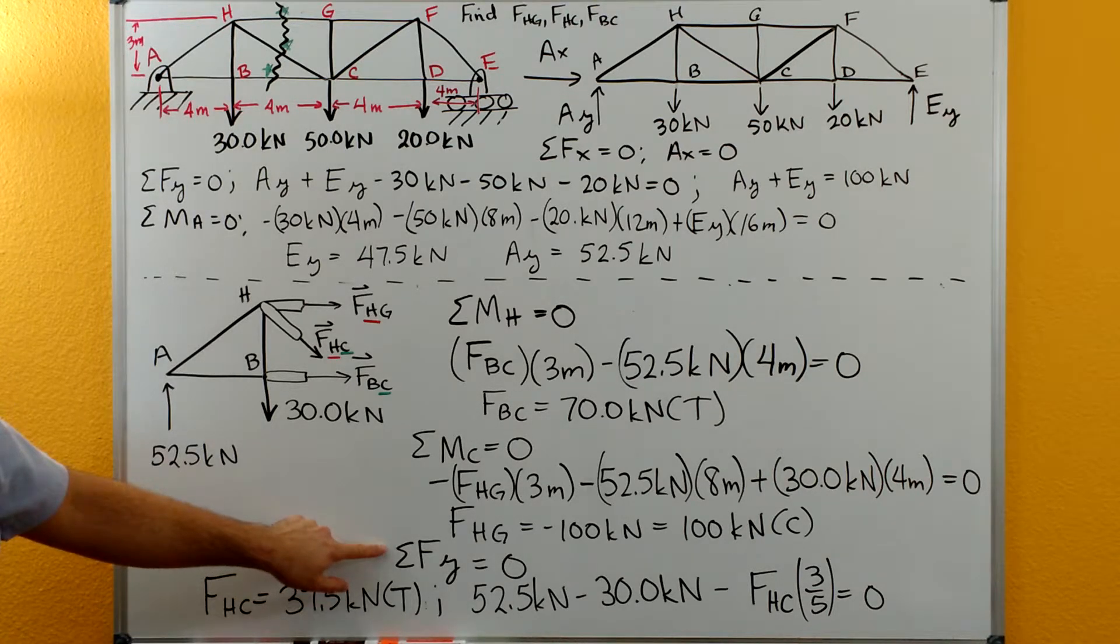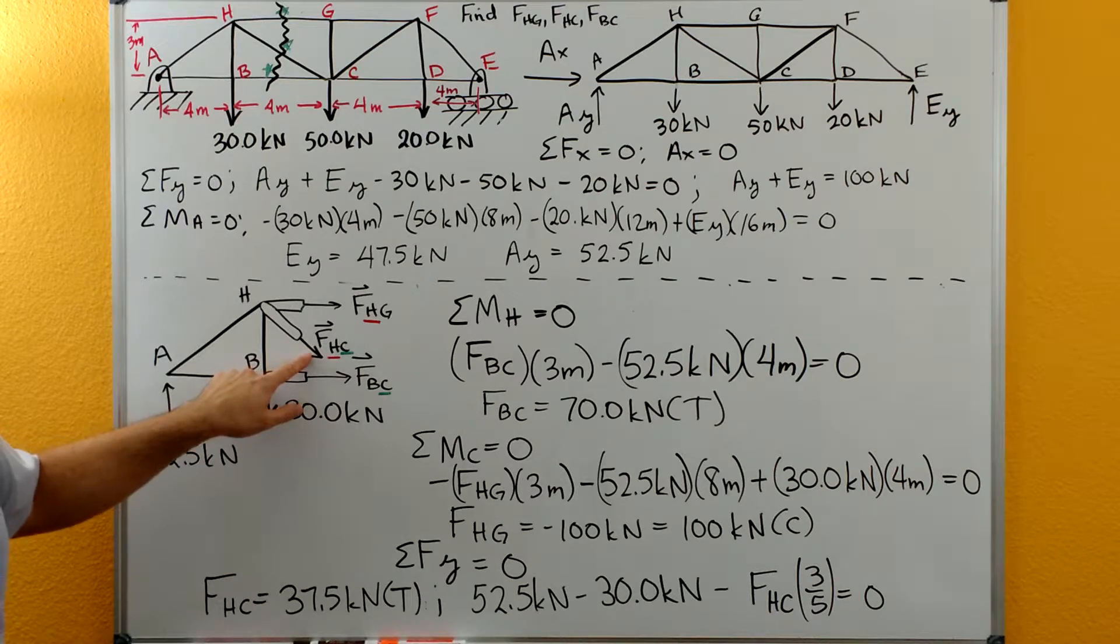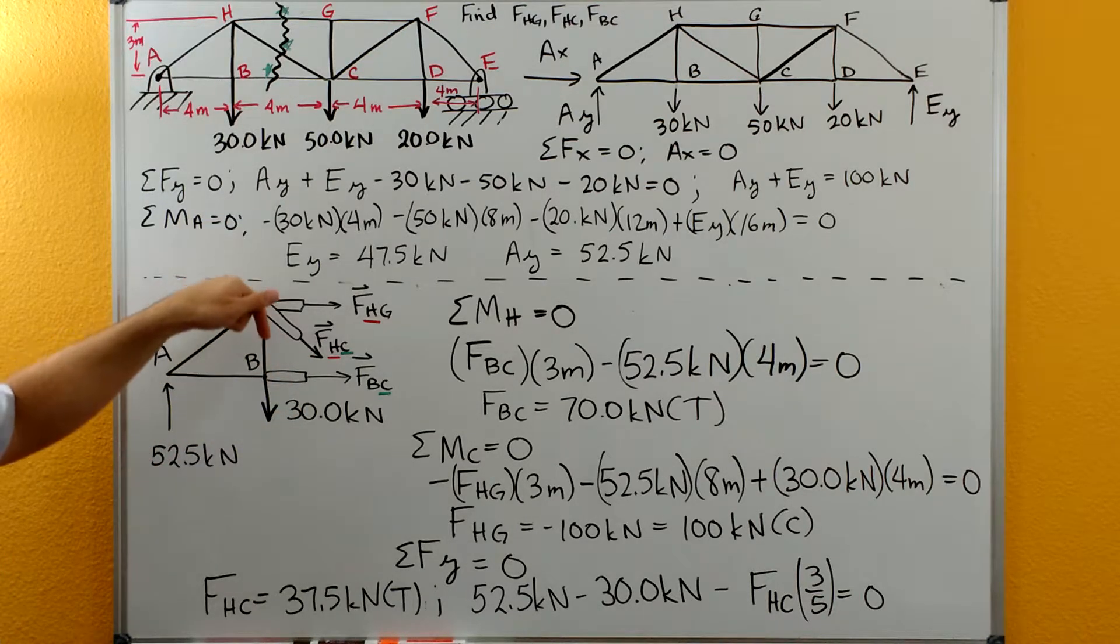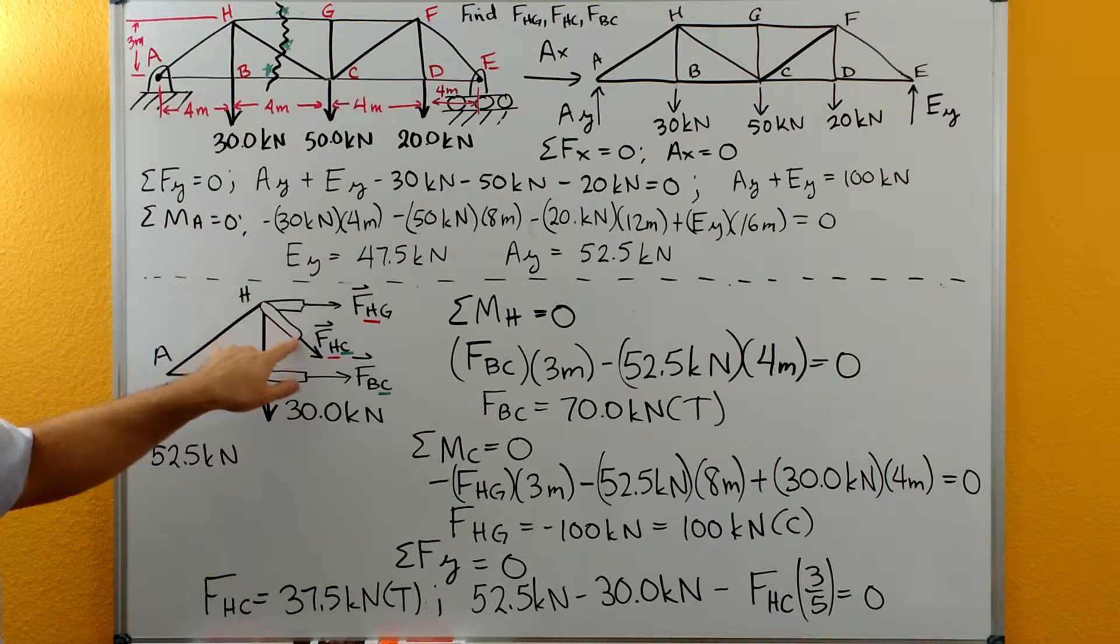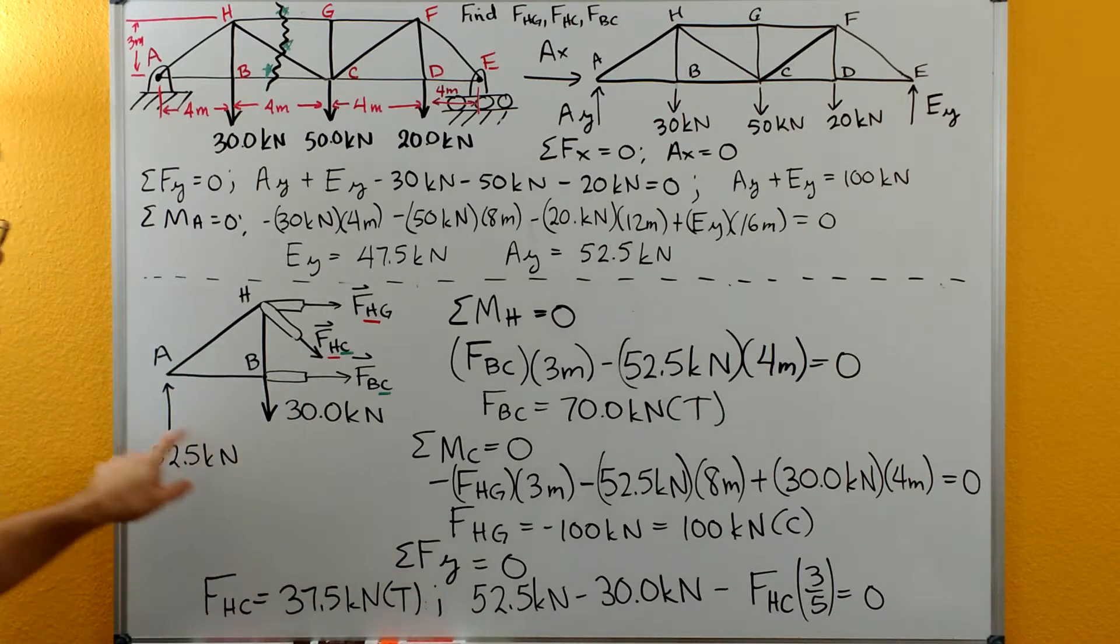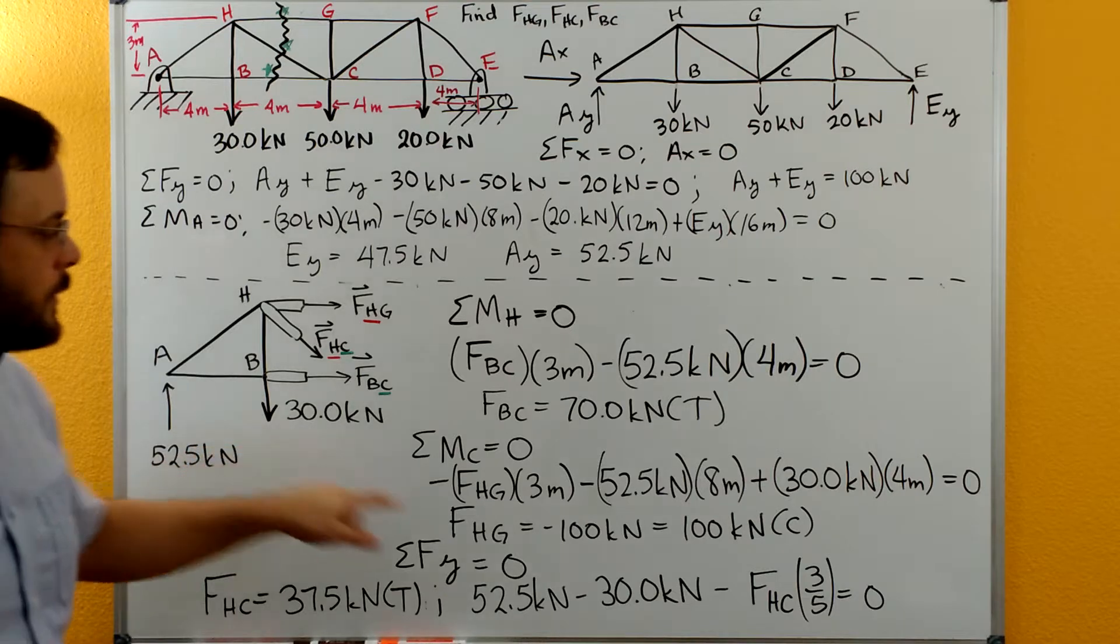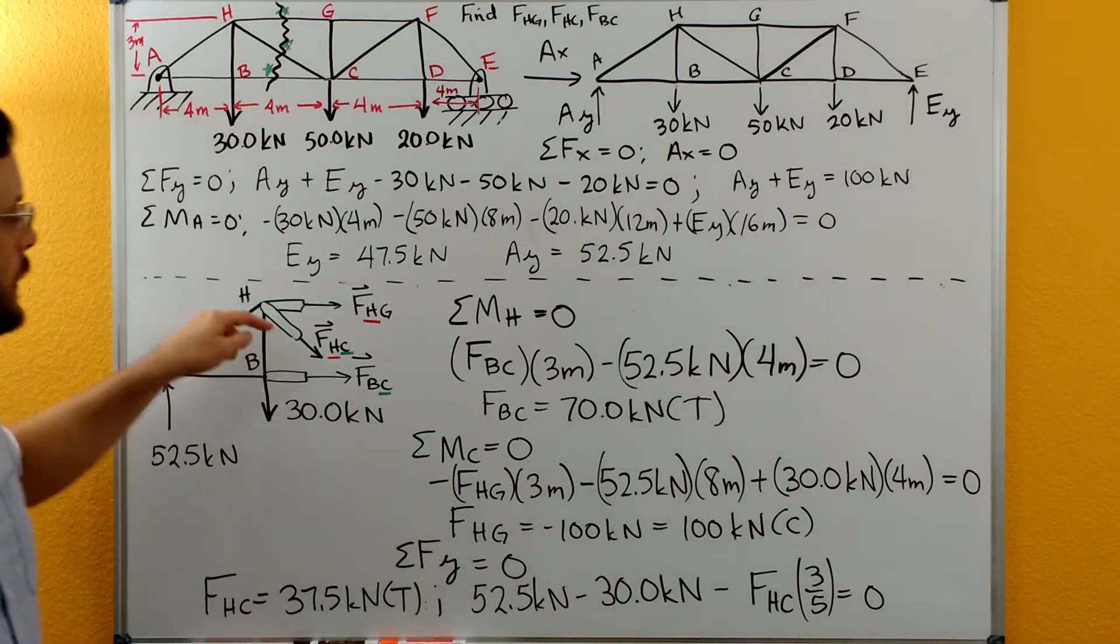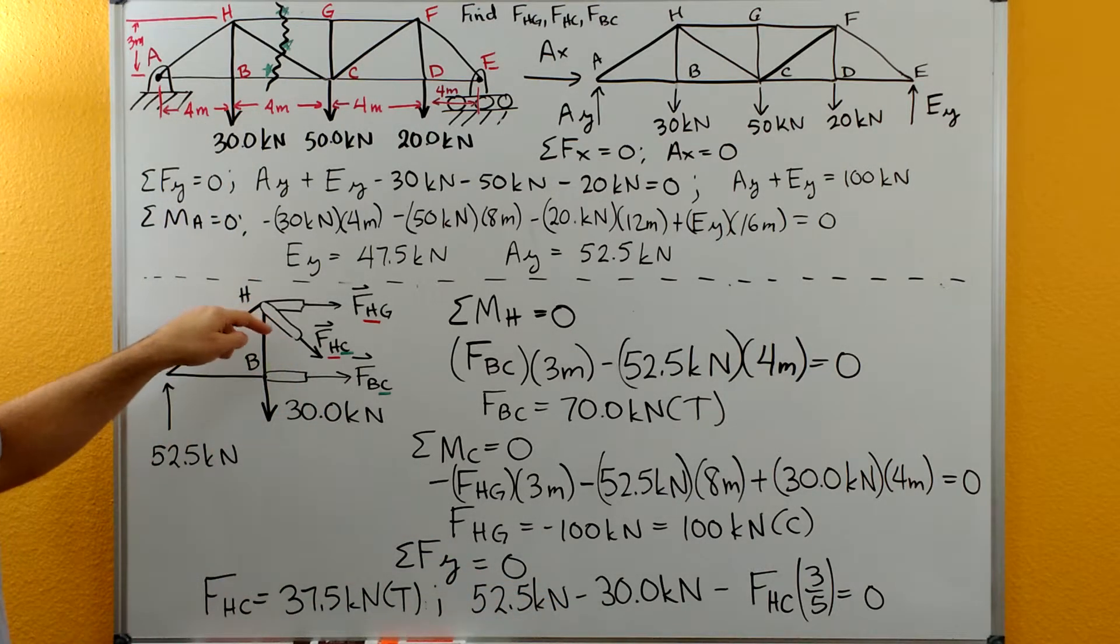Then we can do sum of forces in Y. FHC is the only force with a Y component here, so it'll be our only unknown. We'll have 52.5, negative 30 kilonewtons, and the Y component of FHC.